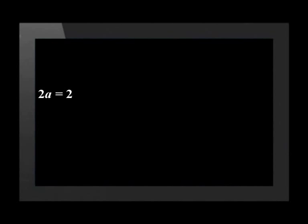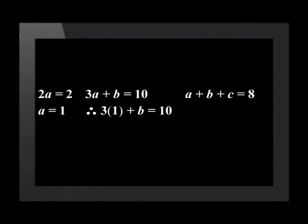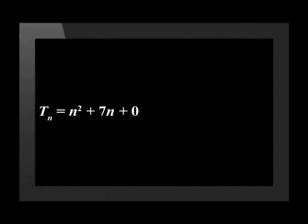Now we solve for the variables. First, we establish the equations: 2a equals 2; 3a plus b equals 10; and a plus b plus c equals 8. Solving for a is easy — it's equal to 1. We substitute that into the next equation and find that b equals 7. We substitute the values for a and b into the last equation and find that c is equal to 0. Therefore, the nth term is given by n squared plus 7n. You can also use simultaneous equations to find the general term of a quadratic sequence.